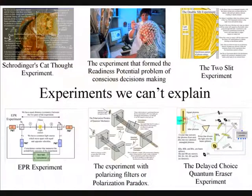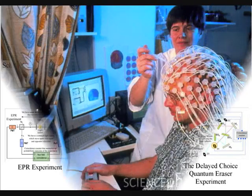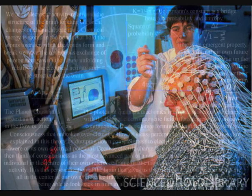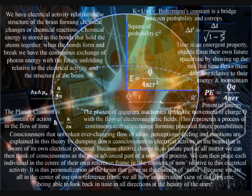The final experiment is the readiness potential problem of conscious decision making. It has been found experimentally that when a person is asked to move or make a decision, the electroactivity in the brain forms a pattern of activity known as the readiness potential.